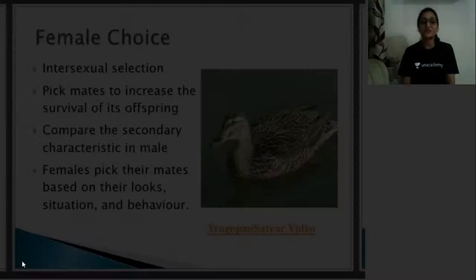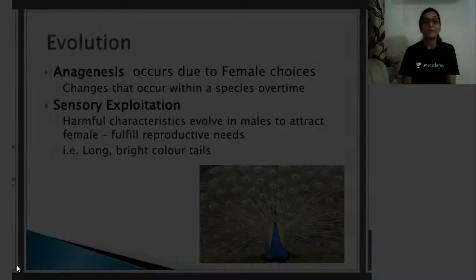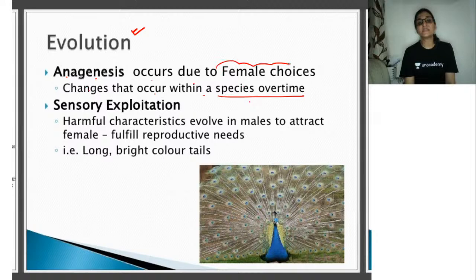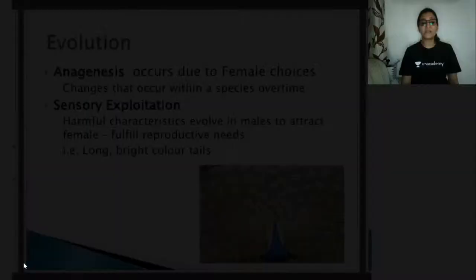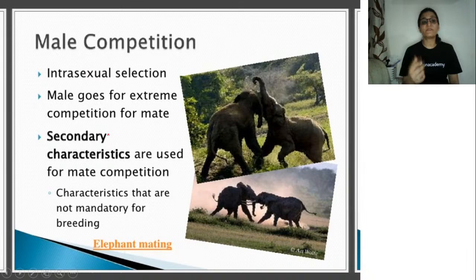Intersexual selection: females pick mates to increase the survival of their offspring. They compare secondary characteristics in males and pick mates based on looks, situation, and behavior. Sexual dimorphism is seen in peacocks — males more often have deleterious characters that reduce their survival chances but attract females. Female choice is also seen in some species of ducks. In anagenesis, female choice drives changes within the species over time. Males develop very dominant and attractive traits so that females direct their attention to them.